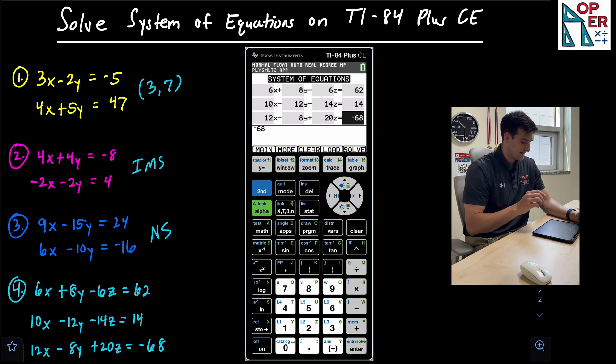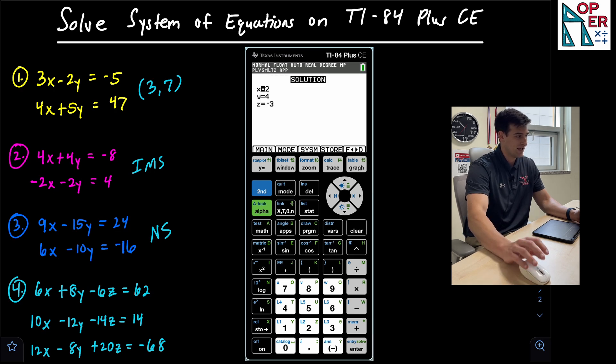So now check those out. Make sure it's right. 6X plus 8Y minus 6Z equals 62. First one's good. 10X minus 12Y minus 14Z equals 14. Equation two is good. 12X minus 8Y plus 20Z equals negative 68. And equation three is good. So we hit solve and voila.